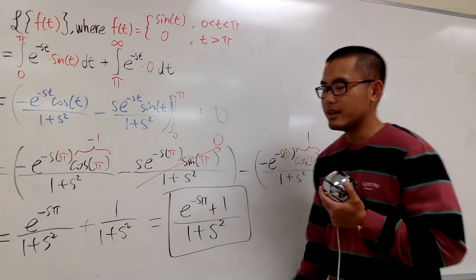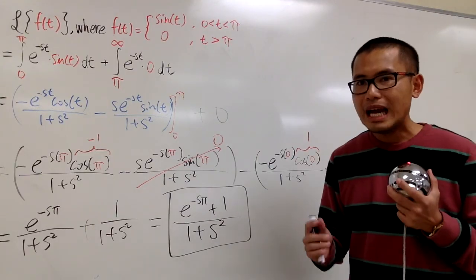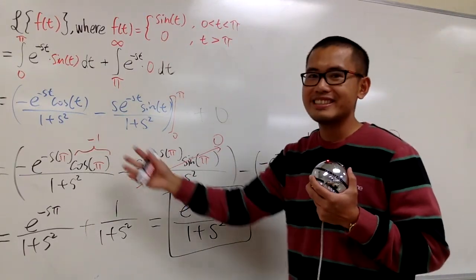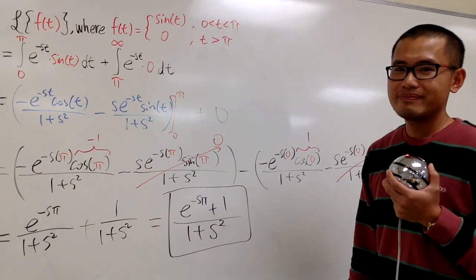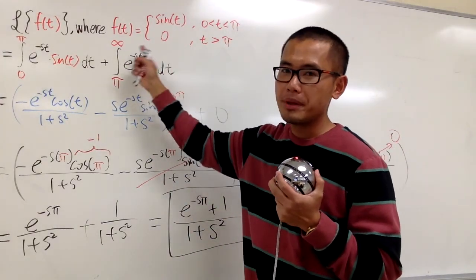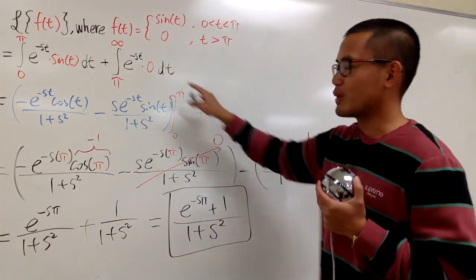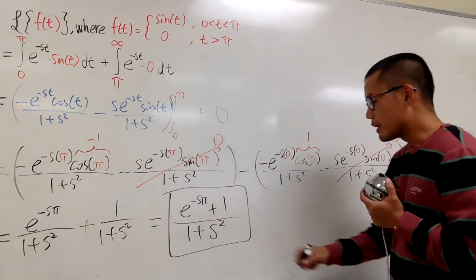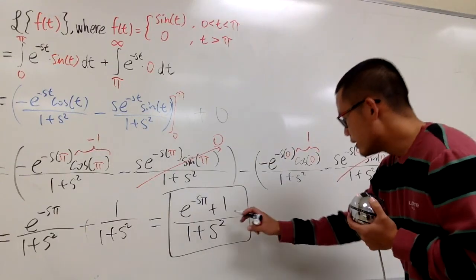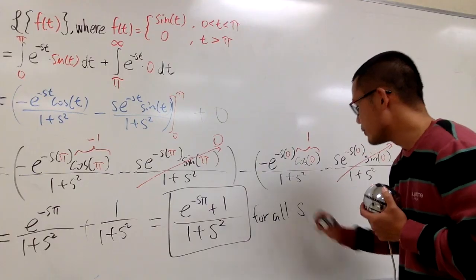The final answer is (e^(−sπ) + 1) / (1 + s²). Notice we did not need to set any condition on s to make this a convergent integral, because the improper integral part was just 0 right away. So this result is true for all values of s.